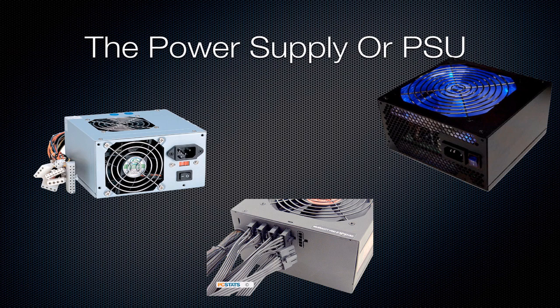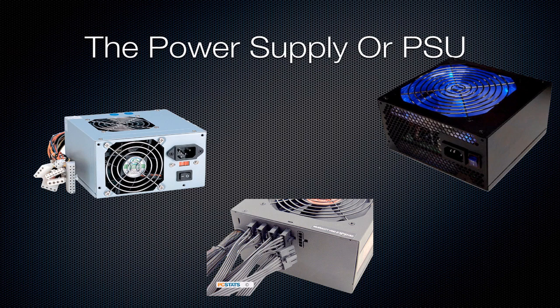This is the power supply, or PSU. What this does is it basically takes AC current — the electricity from an outlet — and converts it into power the computer can use. It has a bunch of wires that go to all the different parts: motherboard, CPU power, and all that stuff. The modular power supply on the bottom lets you only use the cables you need, which is really good for cable management.